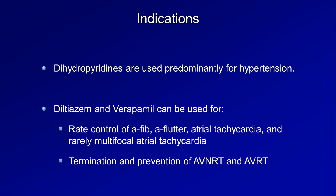Once in a while, diltiazem and verapamil are used for the primary indication of hypertension, but that is uncommon and I cannot think of a reason why a physician would choose to do that. As a general observation, use of diltiazem is much more common than verapamil, particularly for rate control of AFib with rapid ventricular response. However, in some situations, there is not a strong pharmacological reason to prefer one over the other.